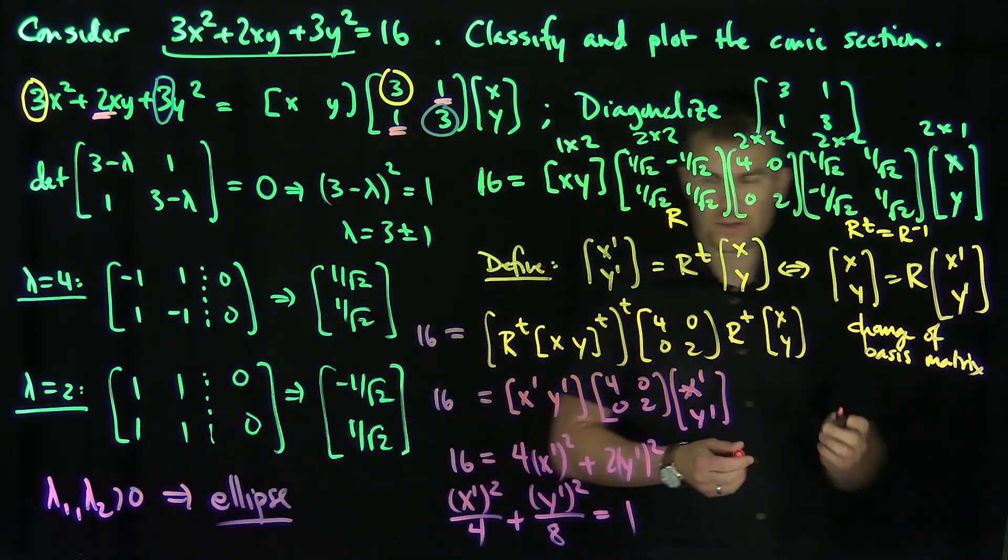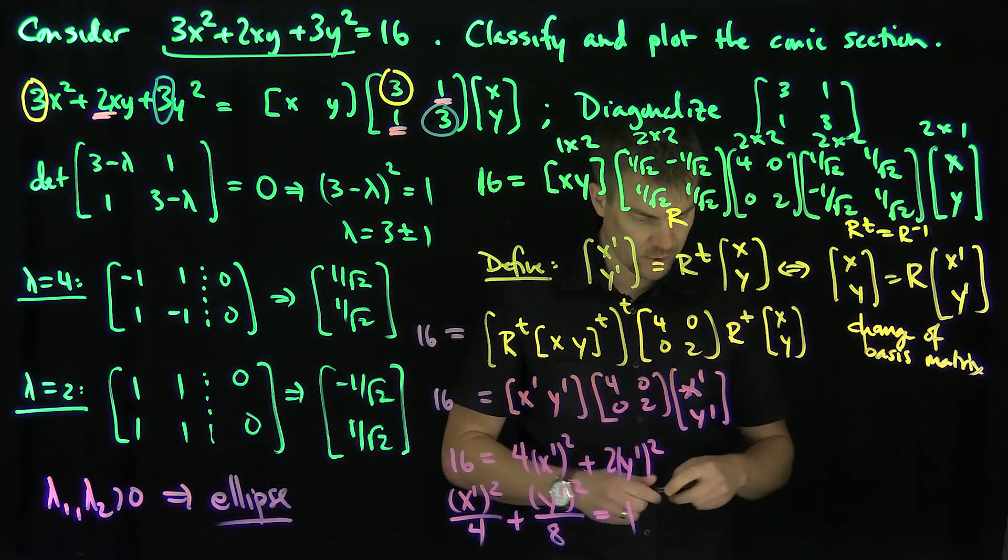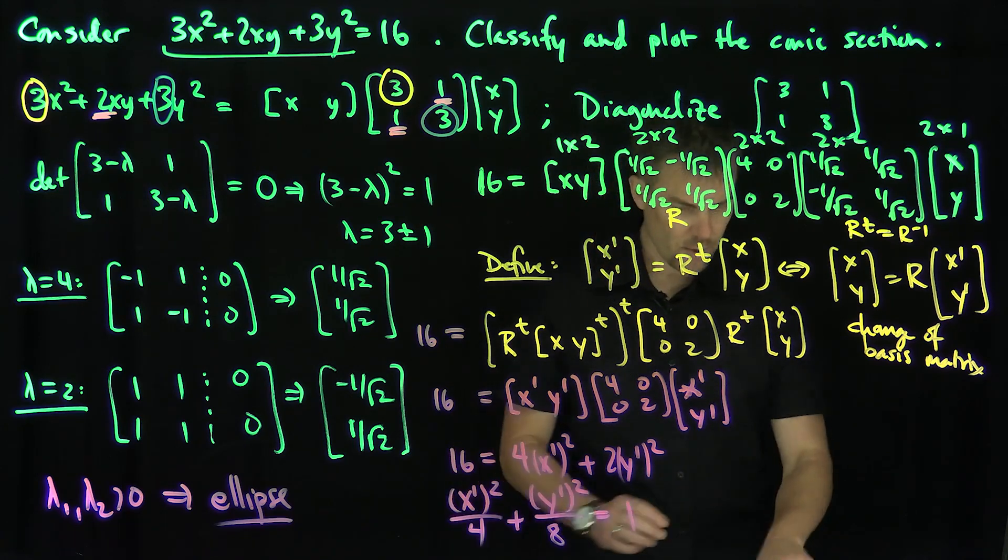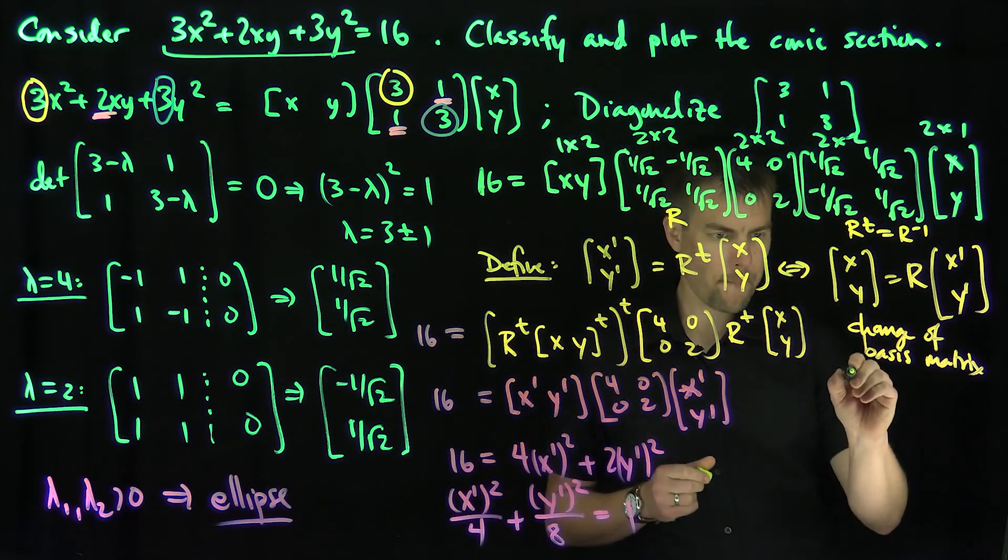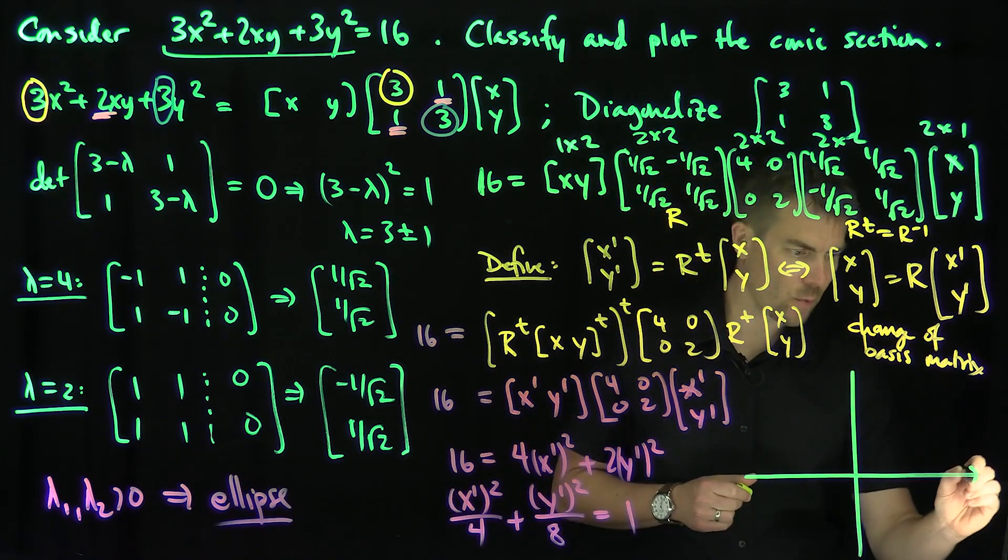And so now what we see, this is a rotated ellipse. So if we plot this rotated ellipse, what we see? We're going to get a graph that looks like this. There's the x-axis, there's the y-axis, there's x and there's y.